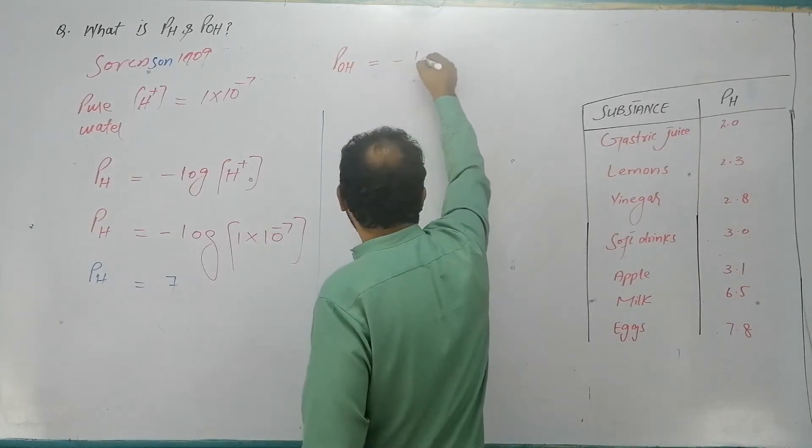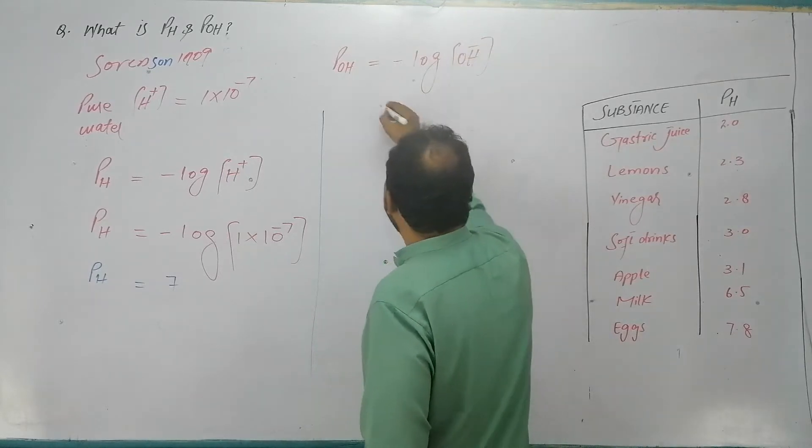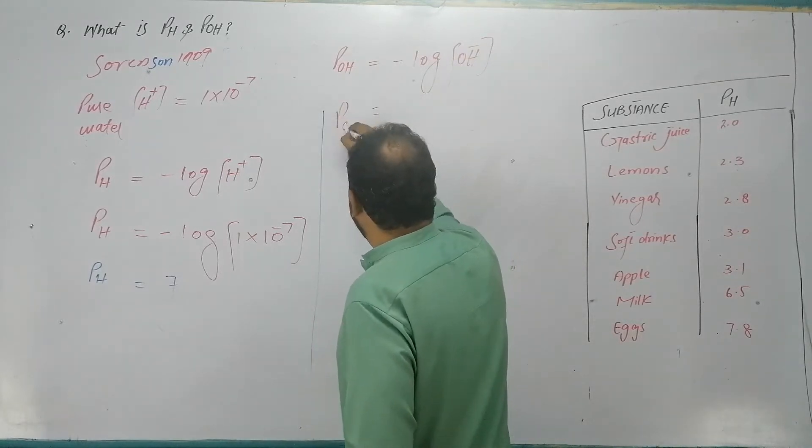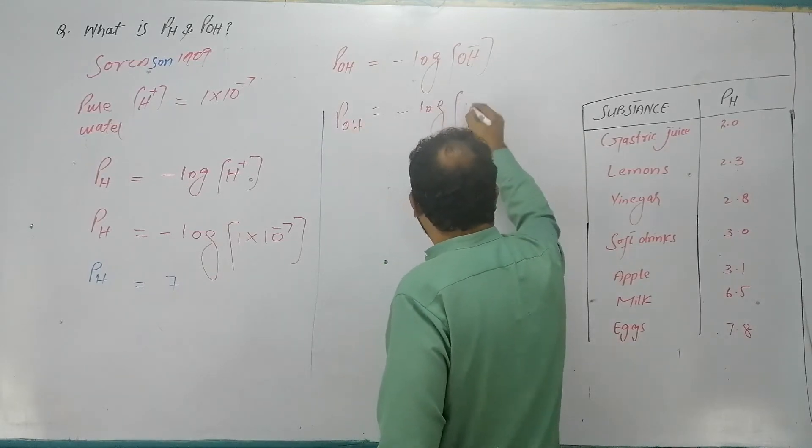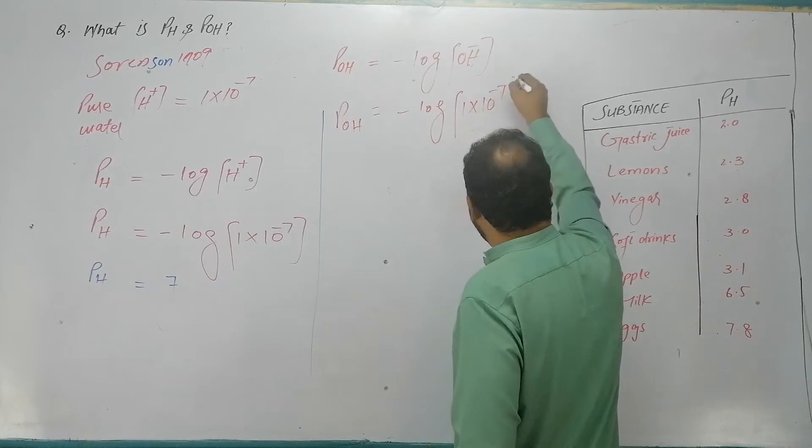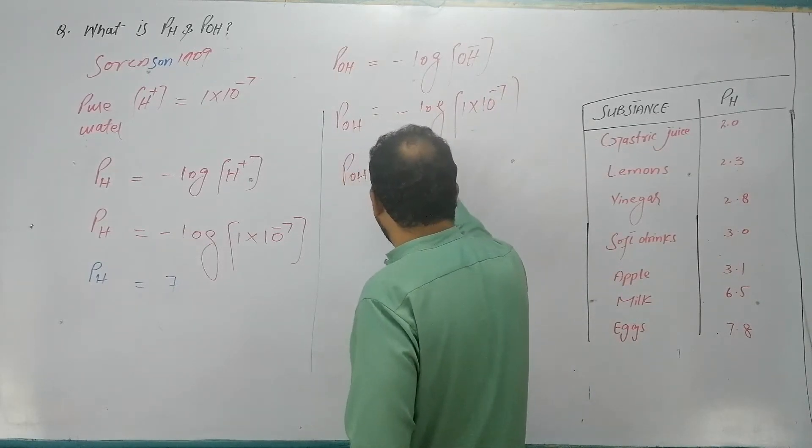Similarly, pOH is the negative log of OH negative ions in pure water. Power of hydroxyl ions equals negative log of 1 into 10 raised to power minus 7, and it is equal to pOH equals plus 7.